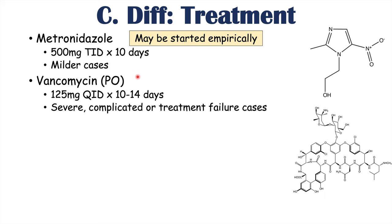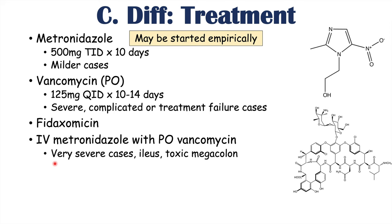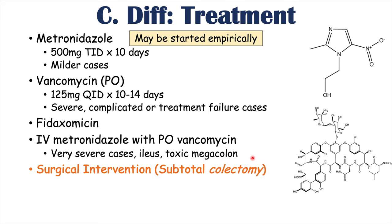Fidaxomicin is another treatment used in more mild to moderate cases. In very severe cases or cases with ileus or toxic megacolon, IV metronidazole combined with PO vancomycin may be used — attacking C. diff from outside and inside the gastrointestinal tract. Vancomycin may also be given per rectum in some very severe cases. Surgical intervention — a subtotal colectomy, or removal of parts of the colon — may be required in patients with fulminant colitis, which is an important cause of death in C. diff infection.